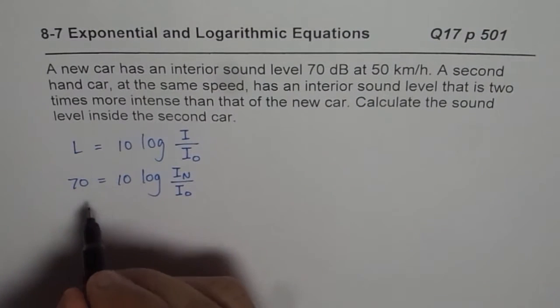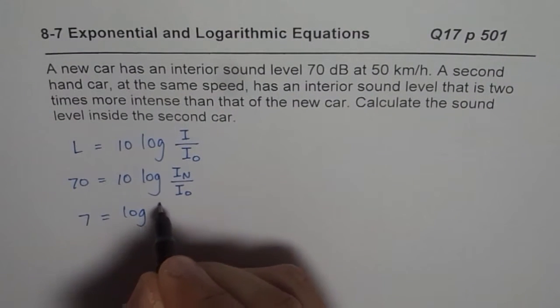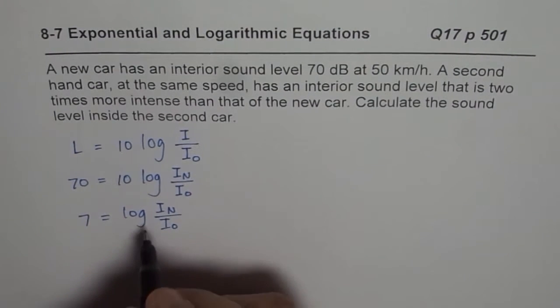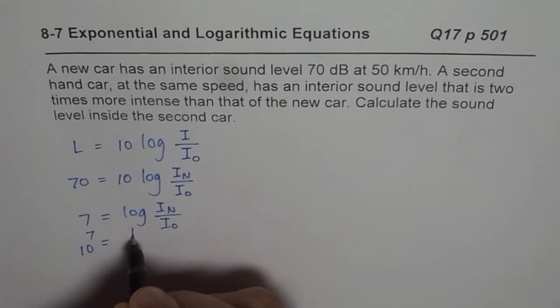So from here we can solve this equation. We have 7 equals log intensity of new car over standard. And then we can write this as 10 to the power of 7 is equals to IN over I0.